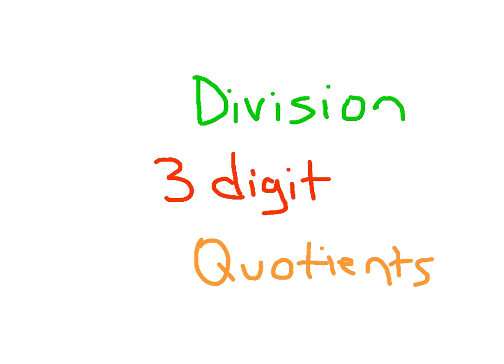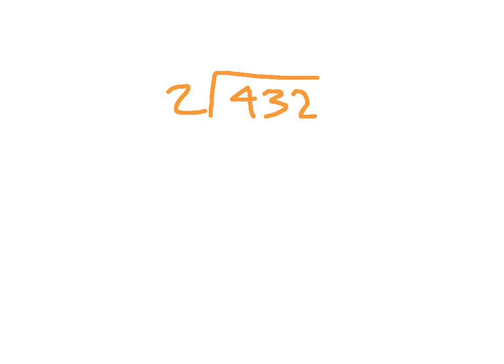Let's move along to division with three-digit quotients. Let's start with this problem here where we have 432 divided by 2. It might help us to remember our division family to remember those steps of division. We will start place by place by place.